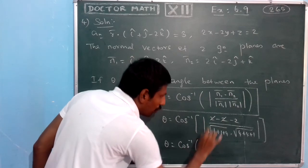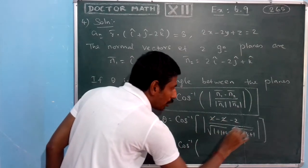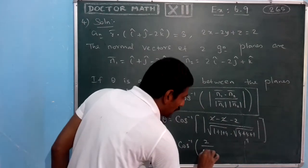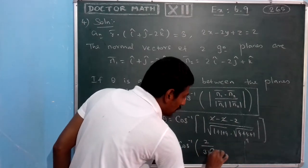Cos inverse of mod, minus 2 plus 2 plus 2, 1 plus 2, 2 plus 1, and the answer 9 will be 3. This is the root of 6.